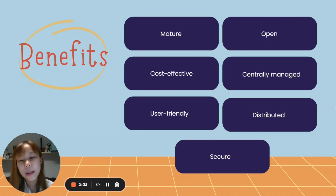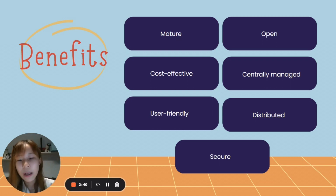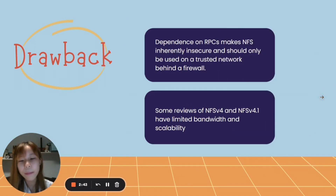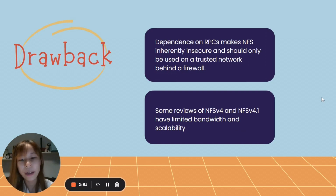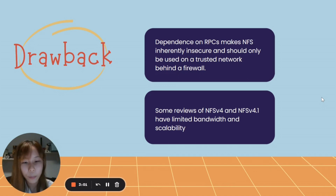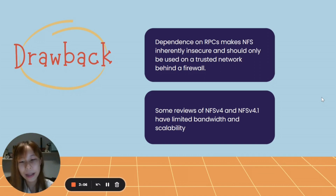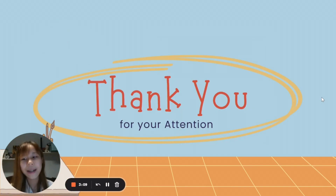With NFS, there is less reliance on removable media like CDs, DVDs, and USB drives. Some drawbacks of using network file systems include the following: dependence on RPC makes NFS inherently insecure and it should only be used on a trusted network behind a firewall. Some reviews of NFS version 4 and version 4.1 suggest that these versions have limited bandwidth and scalability. Thank you for your attention.